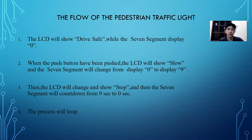For the flow of the pedestrian traffic light: the LCD will show 'Drive Safe' while the 7-segment displays 0. When the push button is pressed, the LCD will show 'Slow' and the 7-segment will count down from 0 to 9, then from 9 to 0. After that, the LCD will change to show 'Stop' and the 7-segment will count down from 9 seconds to 0 seconds.